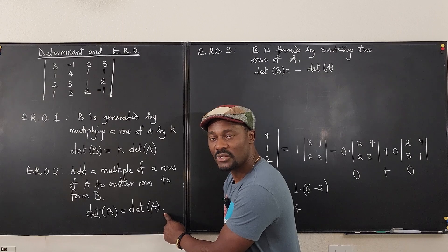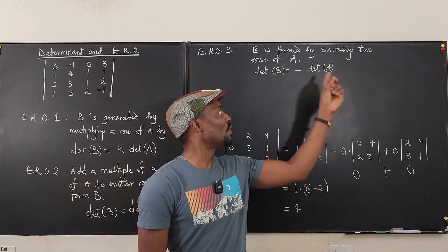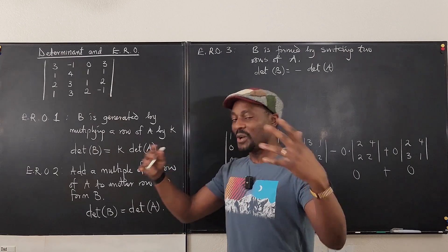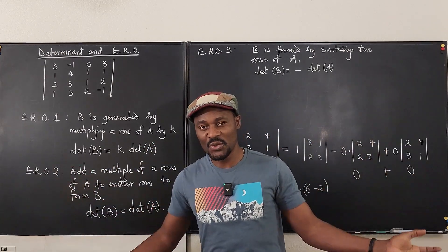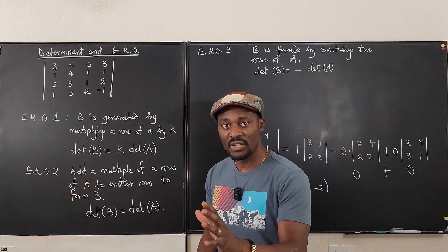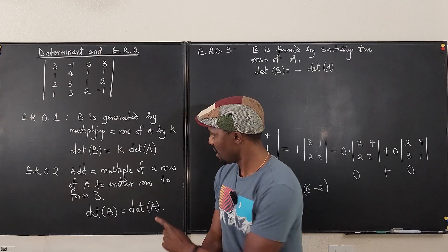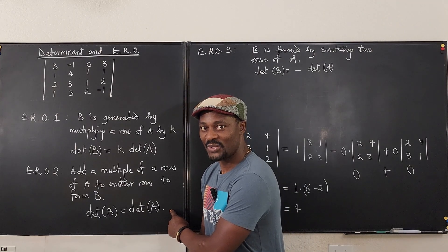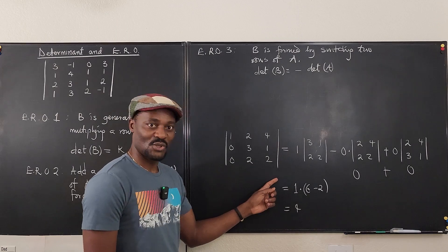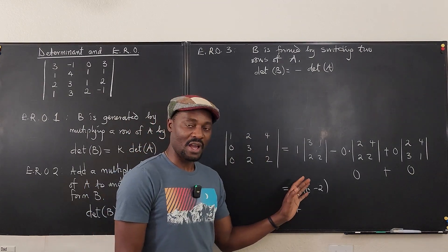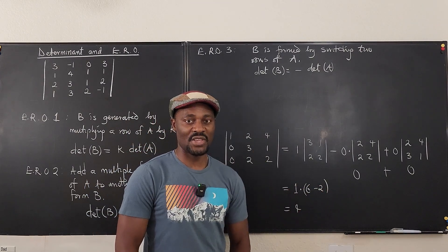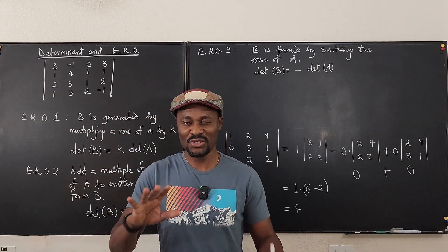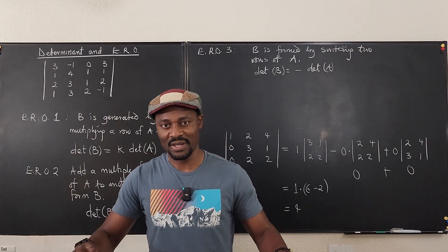My recommendation: don't use ERO 1 or ERO 3 unless absolutely necessary. Stick to ERO 2 for computing determinants, because nothing changes. Get as many zeros as possible, do your cofactor expansion, and get your answer. Just two or three moves and we're done.